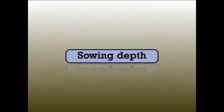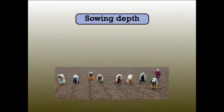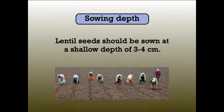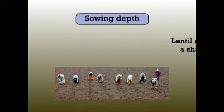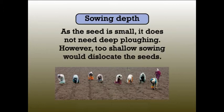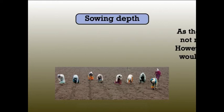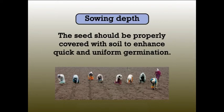Regarding sowing depth, the seed should be sown at a shallow depth of 3 to 4 cm. As the seed is small, it does not need deep ploughing. However, too shallow sowing would dislocate the seeds. The seeds should be properly covered with soil to enhance quick and uniform germination.